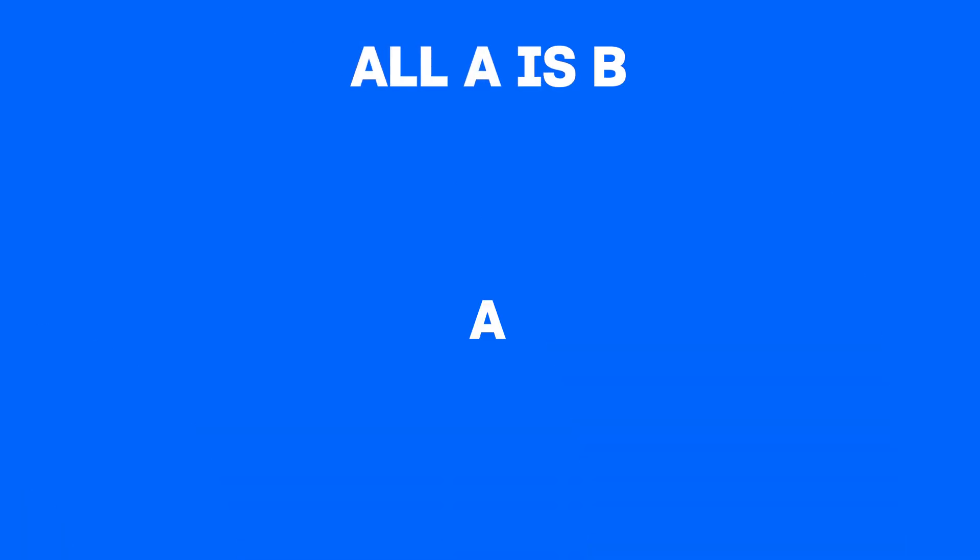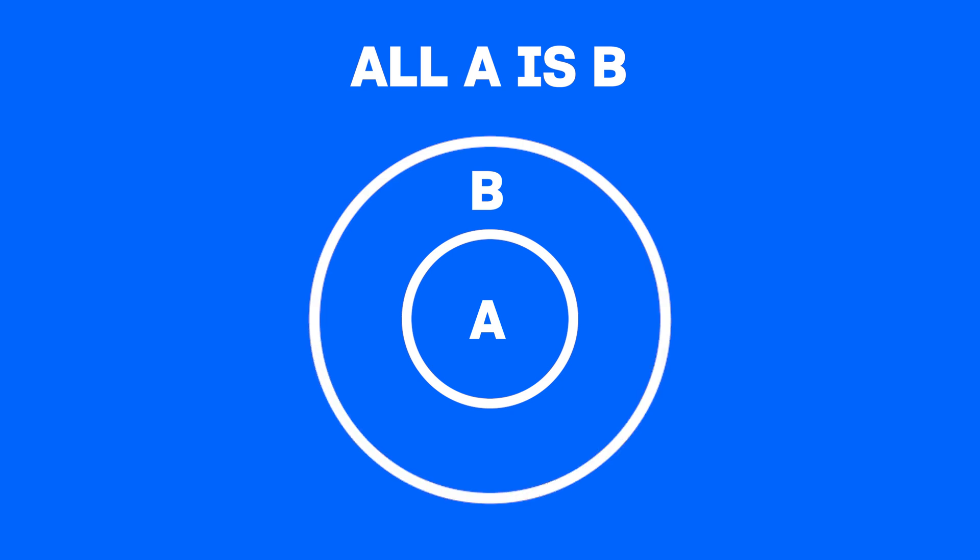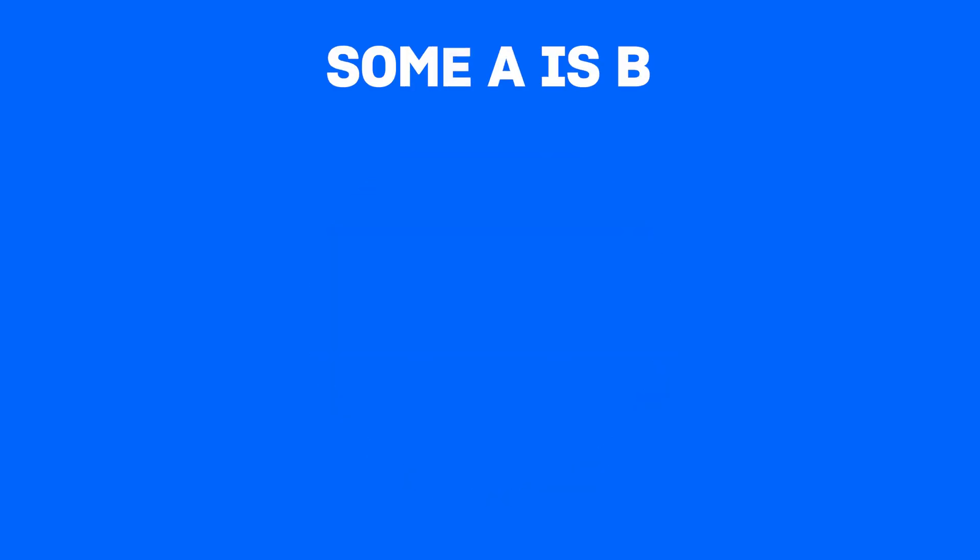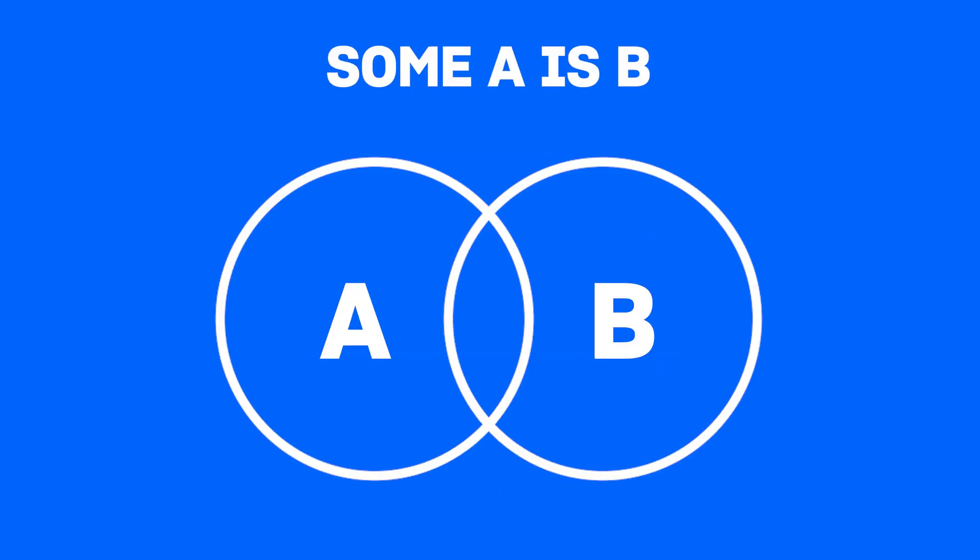Suppose, all A is B, this is how you represent all A is B. Some A is B, this is how you represent some A is B.